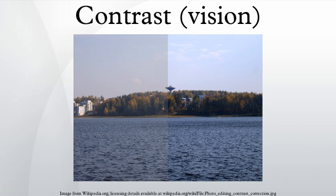Biological Contrast Sensitivity: The human contrast sensitivity function shows a typical band-pass filter shape peaking at around 4 cycles per degree, with sensitivity dropping off either side of the peak. This tells us that the human visual system is most sensitive in detecting contrast differences occurring at 4 cycles per degree — at this spatial frequency, humans can detect lower contrast differences than at any other spatial frequency. The high-frequency cutoff represents the optical limitations of the visual system's ability to resolve detail, and is typically about 60 cycles per degree.